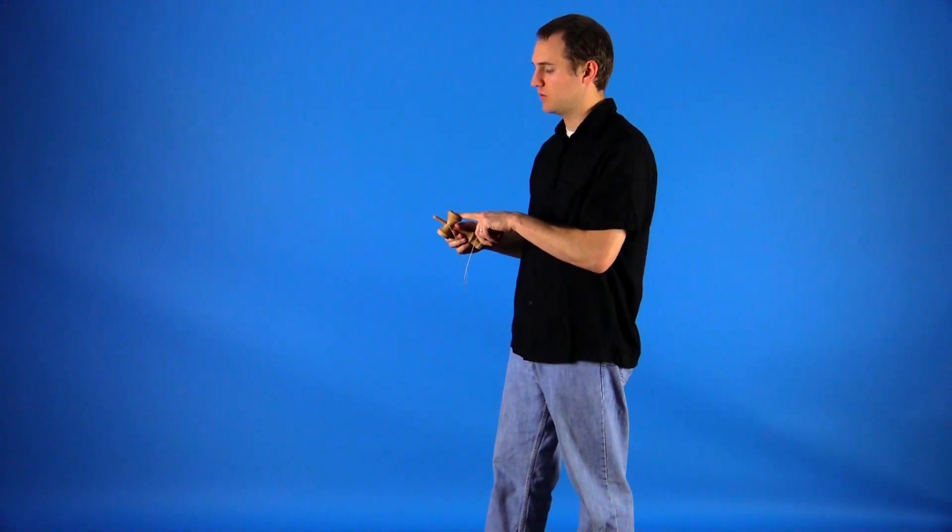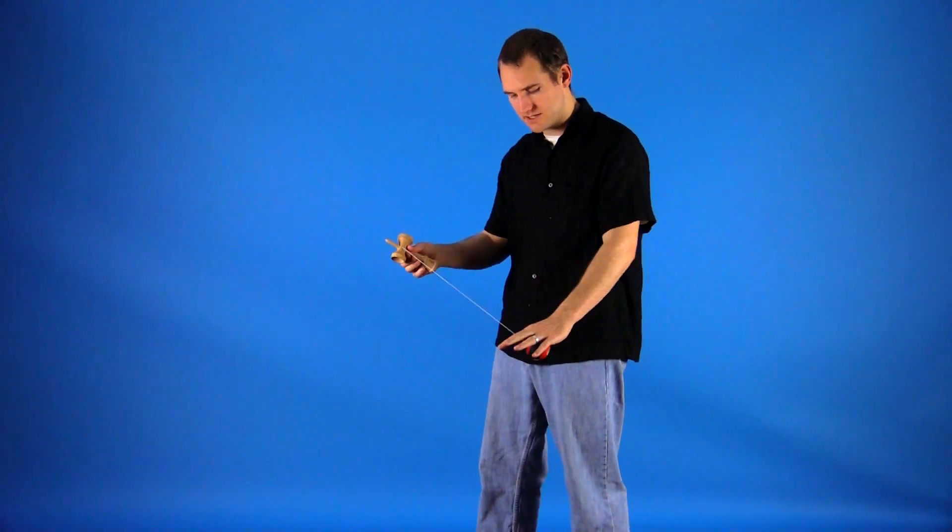To do this, you're going to hold the Kendama in your main hand with the big cup facing you. Hold the Tama in your opposite hand near your body.